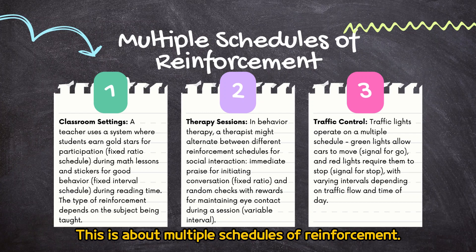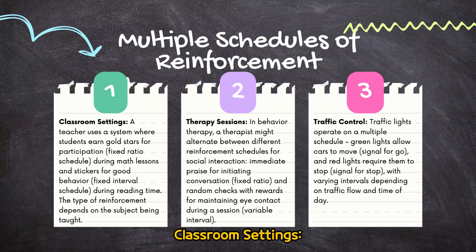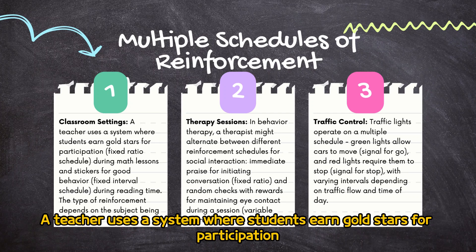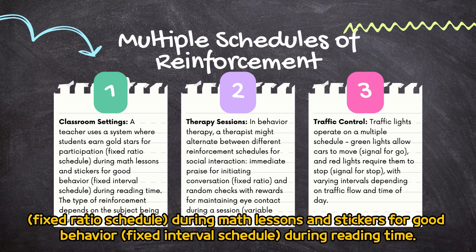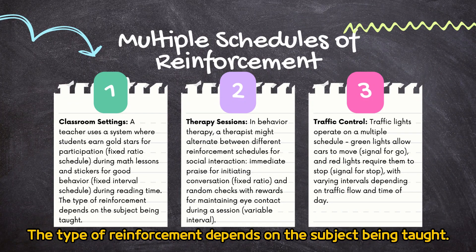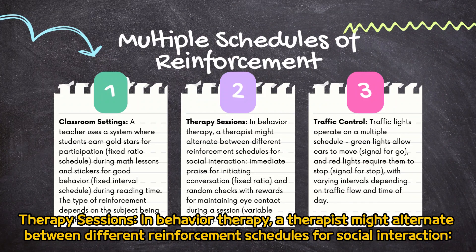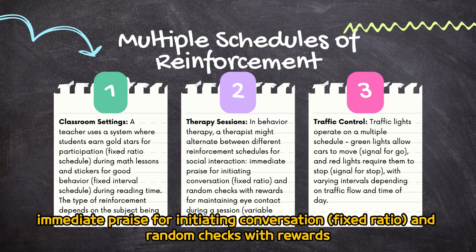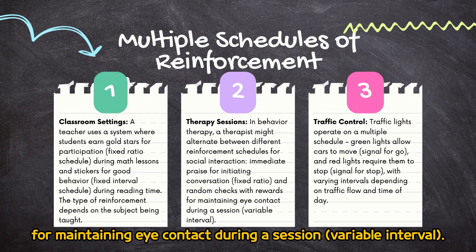This is about multiple schedules of reinforcement. Classroom settings: a teacher uses a system where students earn gold stars for participation on a fixed ratio schedule during math lessons, and stickers for good behavior on a fixed interval schedule during reading time. The type of reinforcement depends on the subject being taught. Therapy sessions: in behavior therapy, a therapist might alternate between different reinforcement schedules for social interaction — immediate praise for initiating conversation (fixed ratio), and random checks with rewards for maintaining eye contact during a session (variable interval).